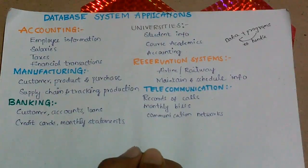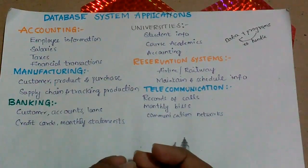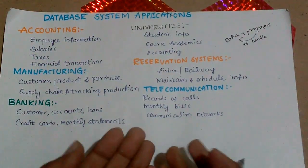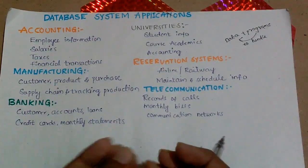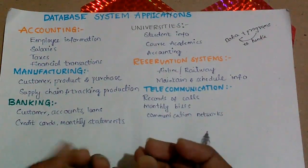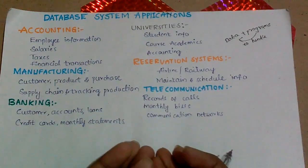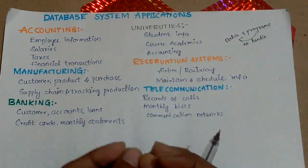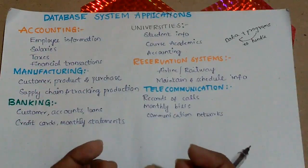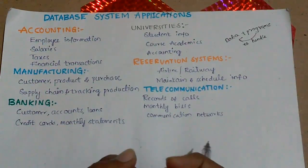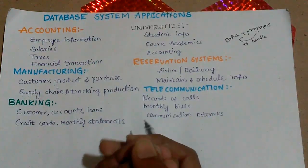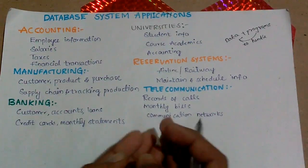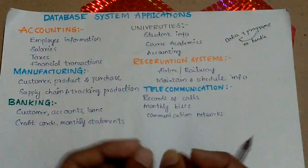Due to the various advantages of DBMS over the file system, we choose DBMS in wide ranges of areas today — including accounting, manufacturing industry, banking, universities, reservation systems, and telecommunication. In the traditional file system there are many concerns like redundancy and atomicity that cannot be handled, but these can be obtained using DBMS. For high security as well, we choose DBMS over the traditional file system.